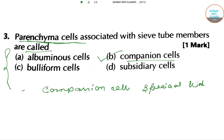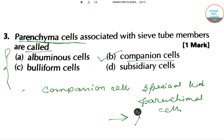Companion cells are a special kind of parenchymal cell responsible for the loading and unloading of photosynthate in the sieve tube. So the answer will be option B.